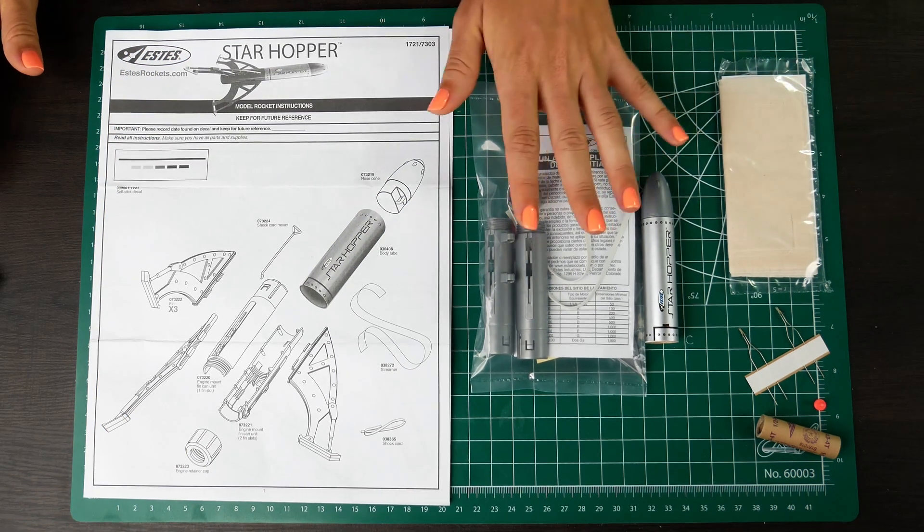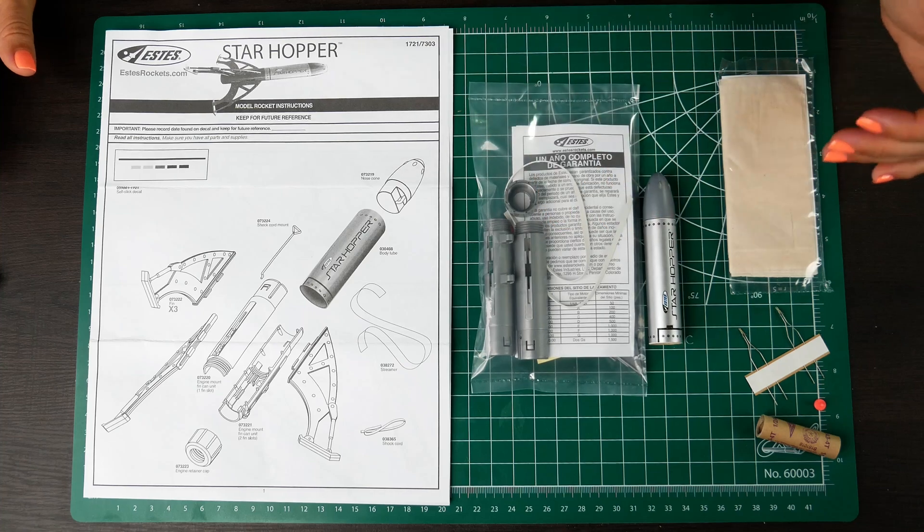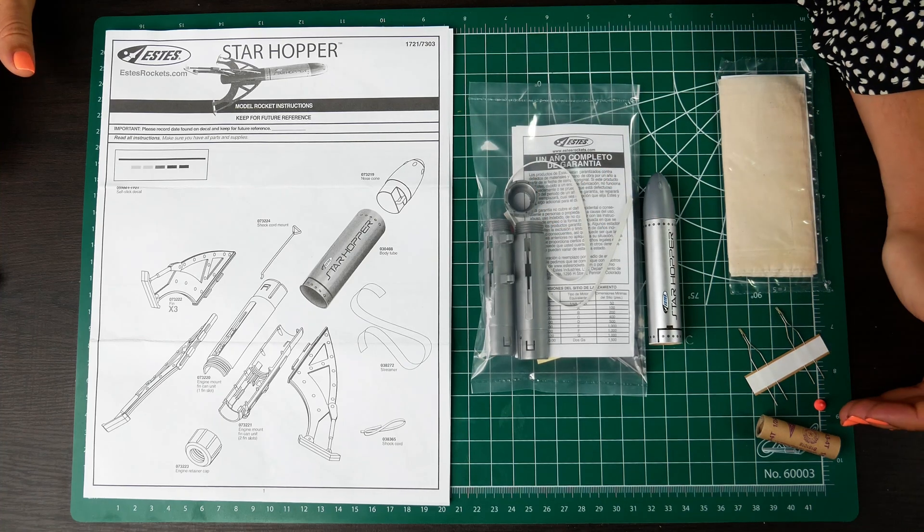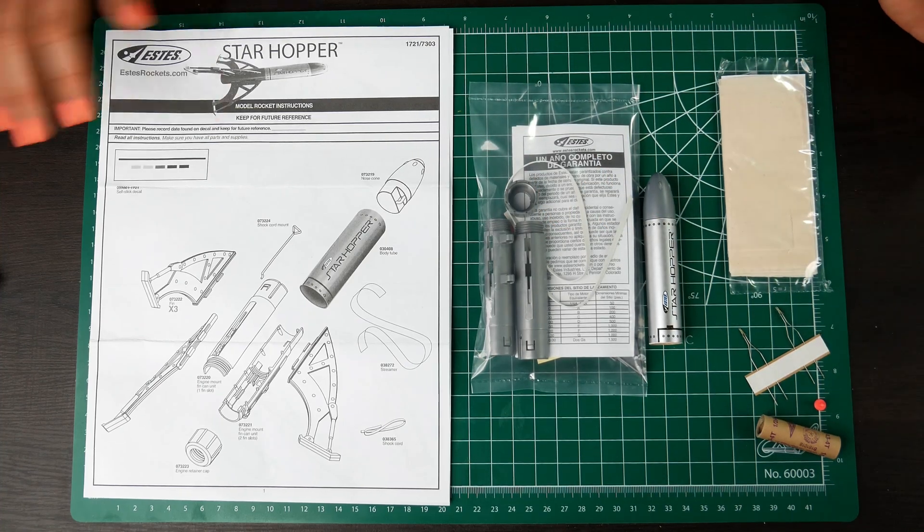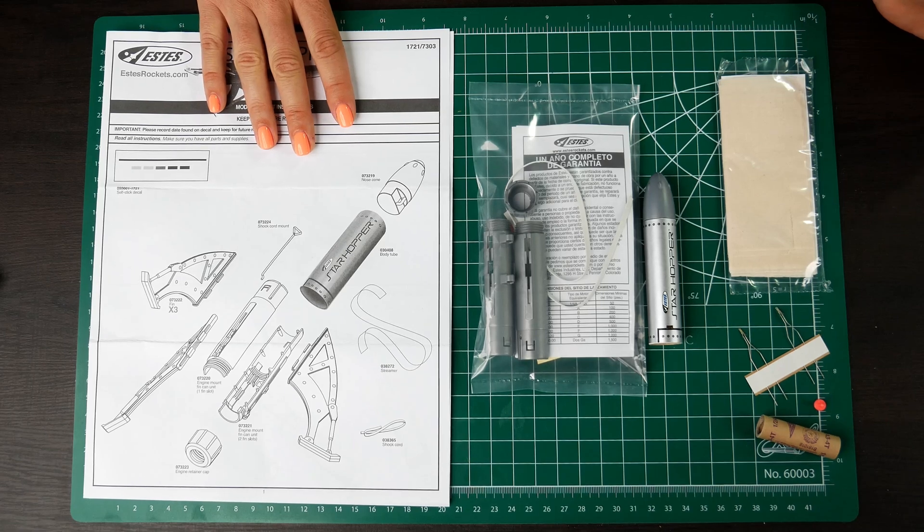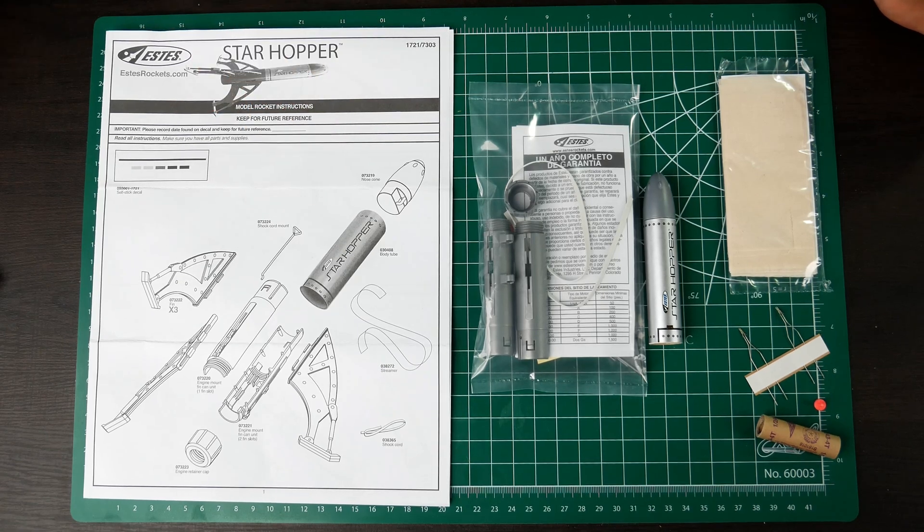For this build, you'll just need the Starhopper kit along with recovery wadding, starters, and an engine if you're gonna prepare it for launch. We will be following the instructions step-by-step, so get yours and follow along.